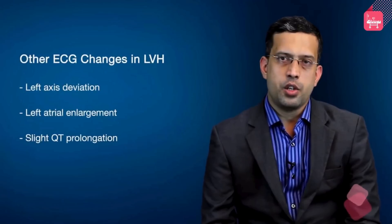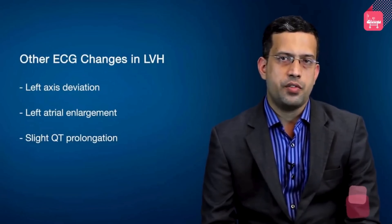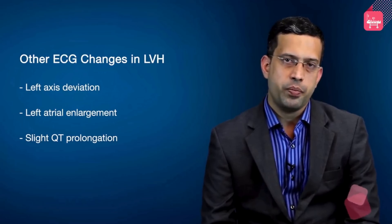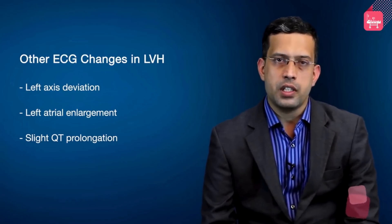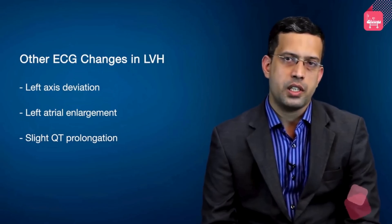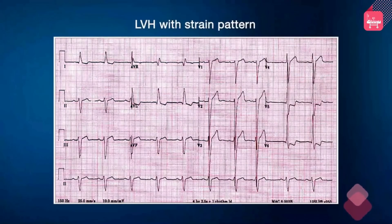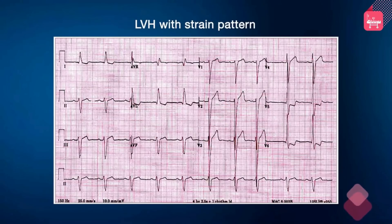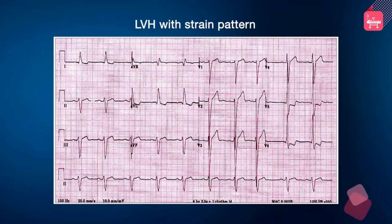Other ECG changes in LVH include axis deviation to the left, presence of accompanying left atrial enlargement, and slight QT prolongation because repolarization also takes a little longer. This ECG shows LVH with strain pattern. You can see deep S waves in V1 and V2, tall R waves in V5 and V6 exceeding the 35 mm Sokolov-Leon cutoff, and down-sloping ST depression with asymmetric T-wave inversion in the lateral leads.